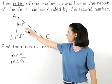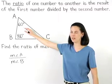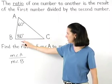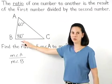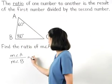And since the measure of angle A is 60 degrees and the measure of angle B is 80 degrees, we have 60 over 80.